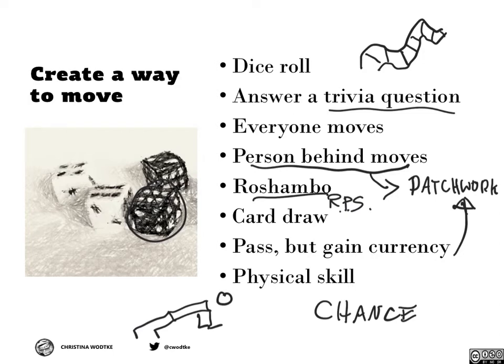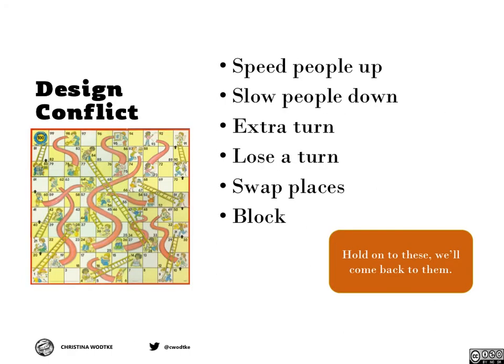Now you might feel like you're kind of done, but it's a very boring, simple game. By adding more conflict — layers of conflict — it'll start to get more and more interesting. Can you think of a way to speed people up or slow people down? In Chutes and Ladders, we have ladders where you can jump way ahead, and chutes that do quite the opposite.